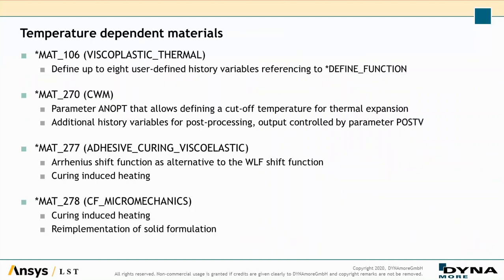Further temperature-dependent material enhancements: MAT106 can now define up to eight user-defined history variables referencing a define function. MAT270 also got the cut-off temperature for thermal expansion and additional history variables for post-processing. MAT277 has an alternative Arrhenius shift function for the WLF shift function, plus curing-induced heating. MAT278 for carbon fiber micromechanics also got curing-induced heating, and received a complete re-implementation of its solid formulation which previously did not work well.